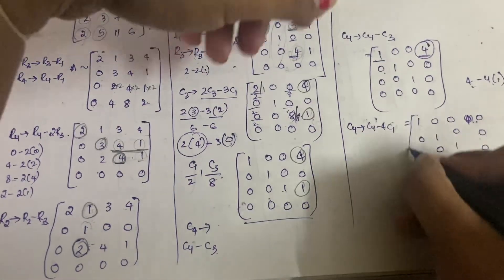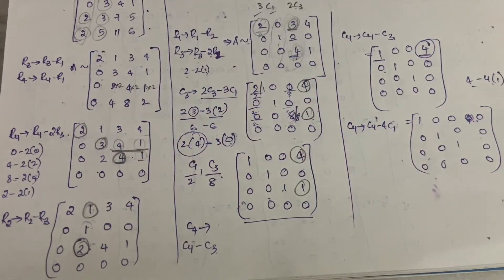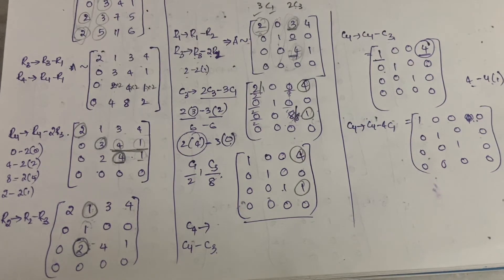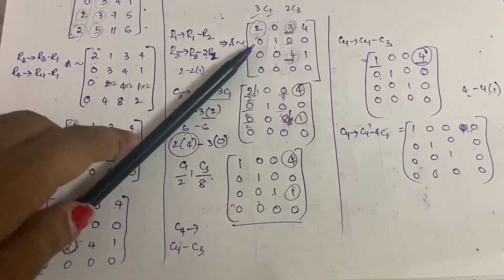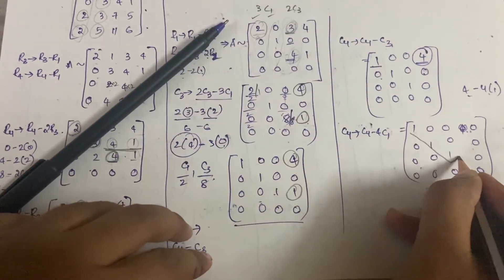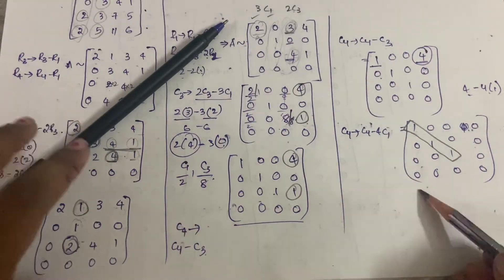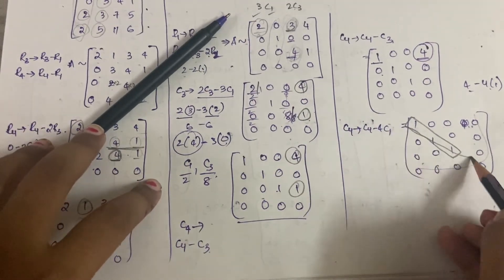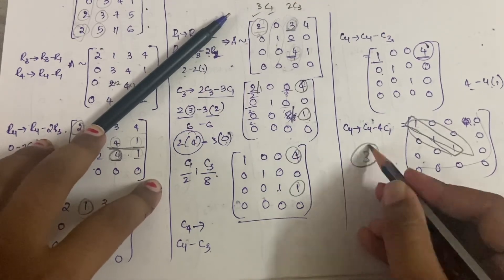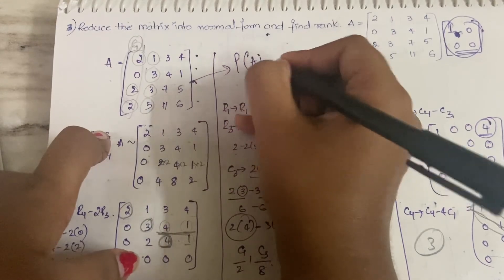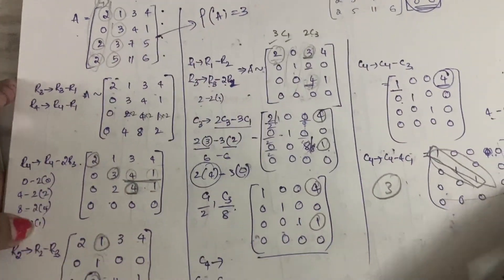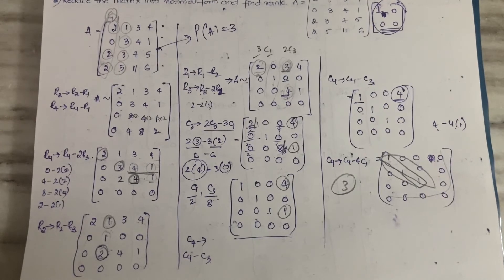We now have the identity matrix I_3 surrounded by zeros — don't mind the thread on my hand, it's Ugadi today! The order of the identity matrix is 3, so the rank of this matrix is equal to 3.